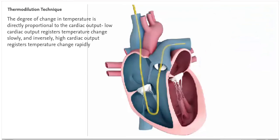The degree of change in temperature is directly proportional to the cardiac output. Low cardiac output registers temperature change slowly, and inversely, high cardiac output registers temperature change rapidly.